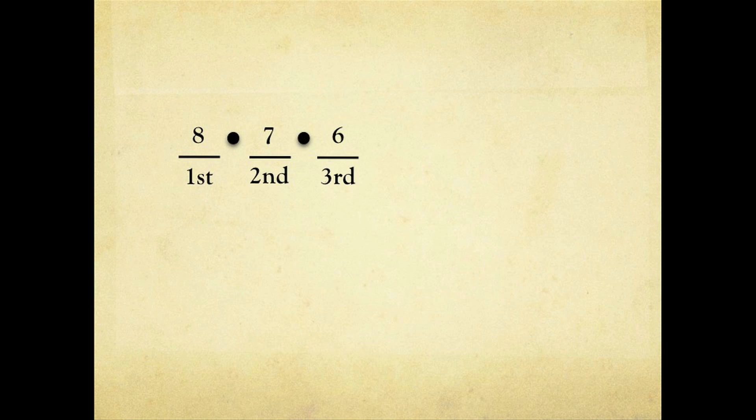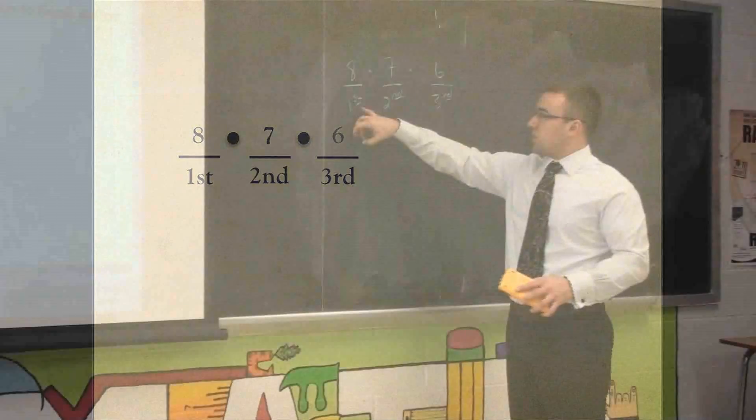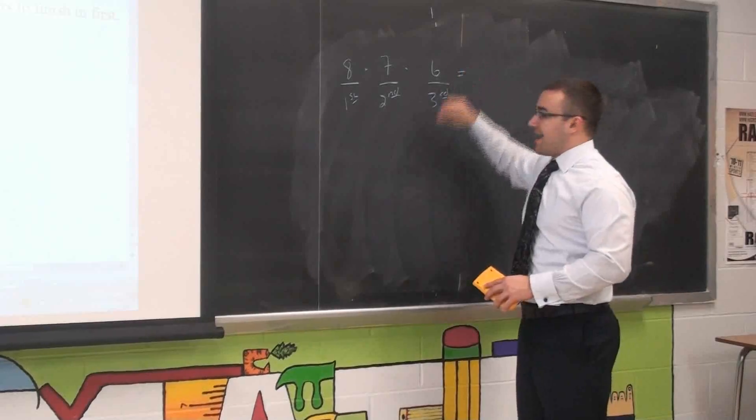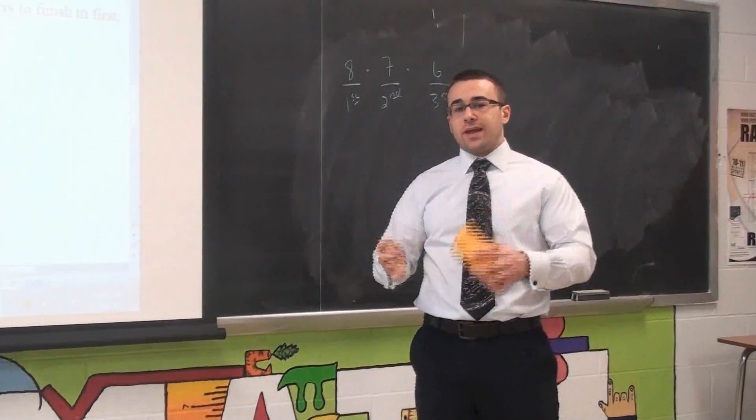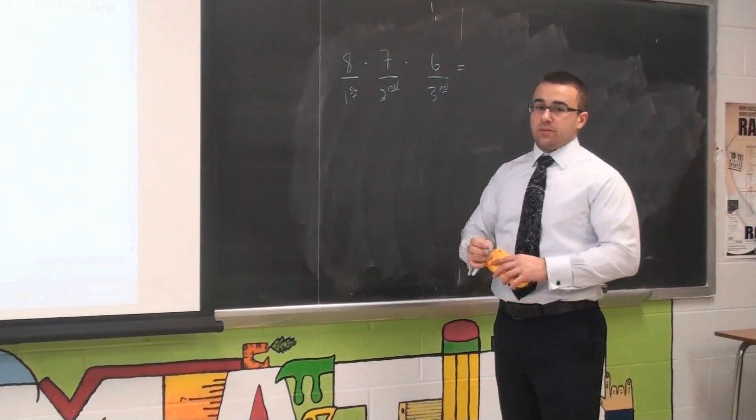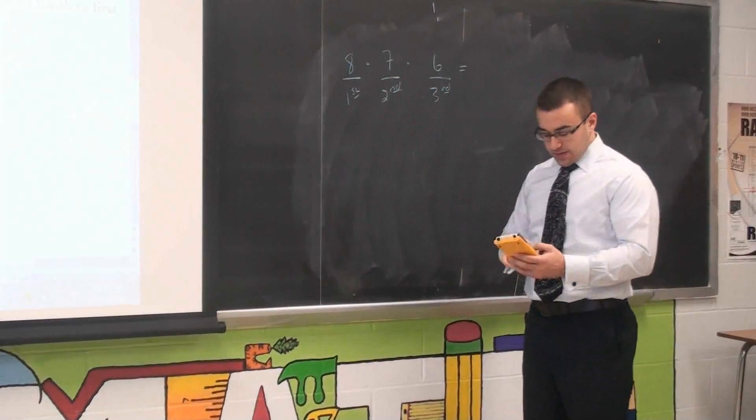And then we would continue with this process in this pattern down to six because we're only looking at first, second, and third. Anytime we're looking at the possible outcomes or the amount of different ways, it is the operation of multiplication or product. Eight times seven times six.